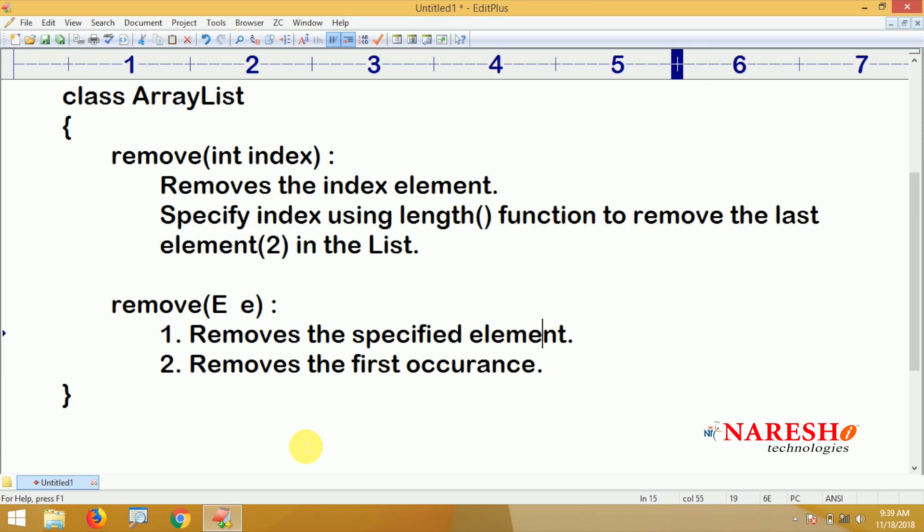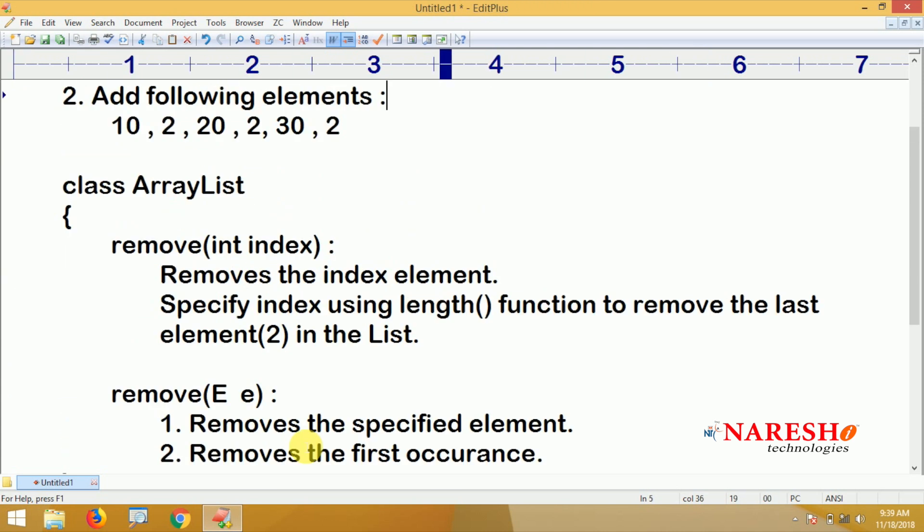Here is my requirement: remove that last element using the remove method which is taking index. Next, remove that second element by specifying that element directly using the second remove method. This is the task.